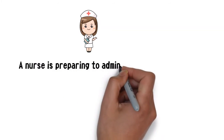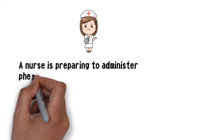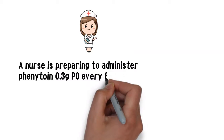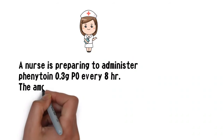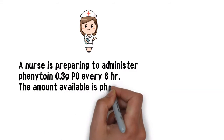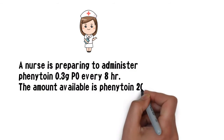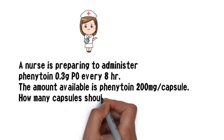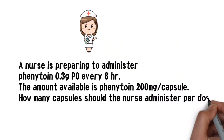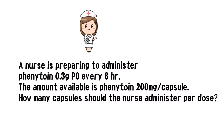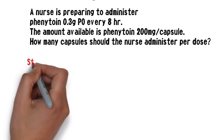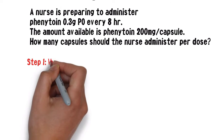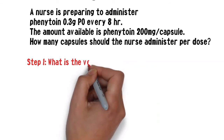A nurse is preparing to administer phenytoin 0.3 grams PO every eight hours. The amount available is phenytoin 200 milligrams per capsule. How many capsules should the nurse administer per dose? We're going to break this down into steps.